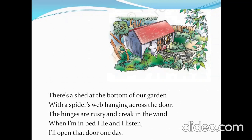In this stanza, the poet is describing the shed. There is a shed situated at the bottom — here 'bottom' means at the end of the garden. Just because no one visits the shed or cleans it, it is very dirty, and that's why there are spider webs hanging across the door.